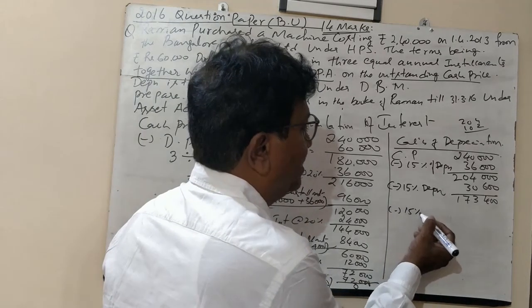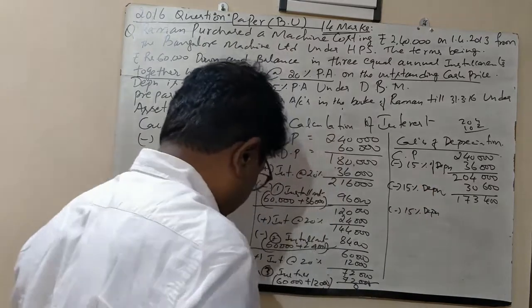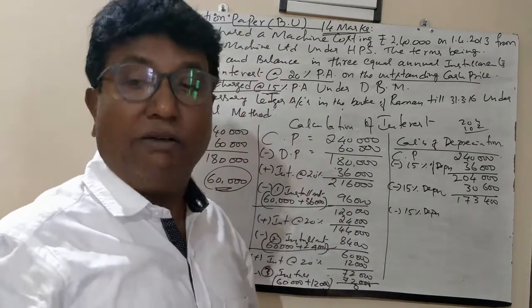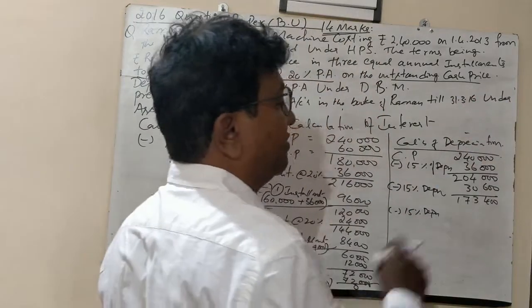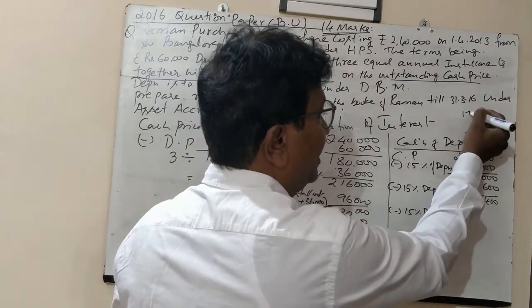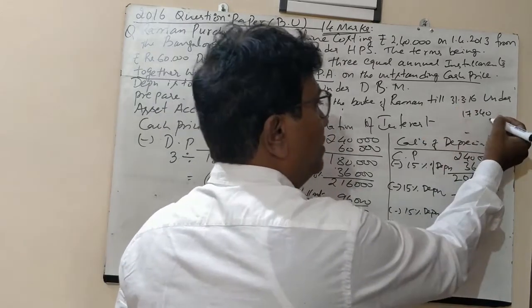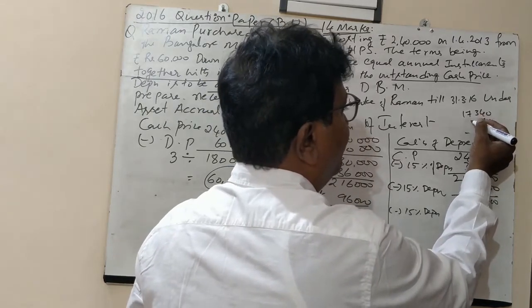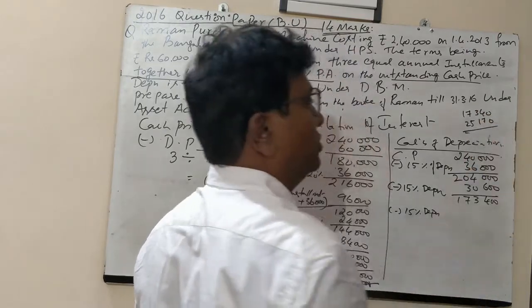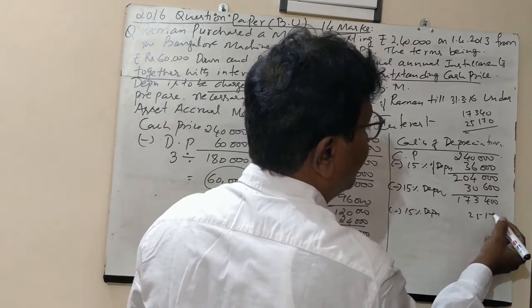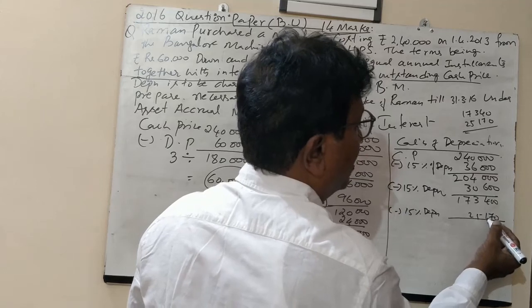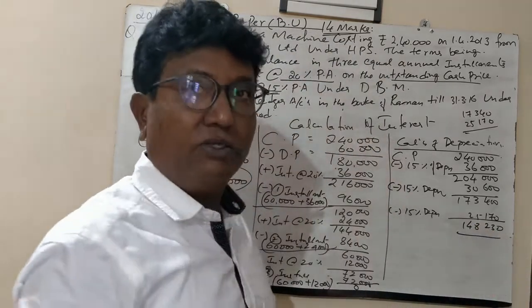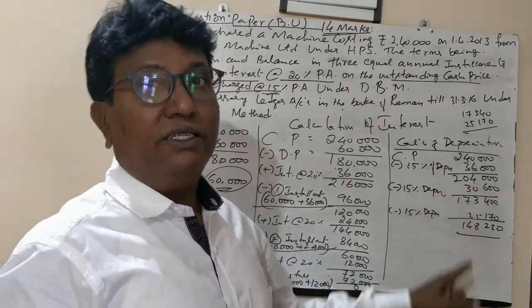We calculate 15% depreciation for the third year on ₹1,73,400. 10% is ₹17,340 and half of that is ₹8,670, so 15% equals ₹25,170. The closing balance after third year depreciation is ₹1,48,230.